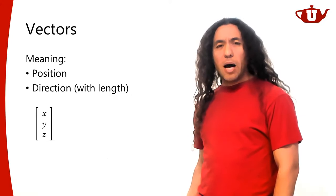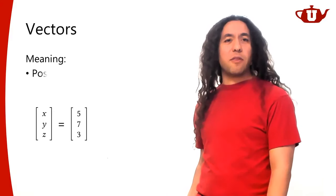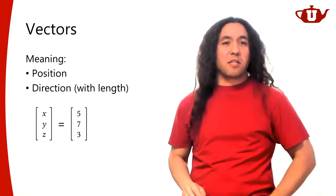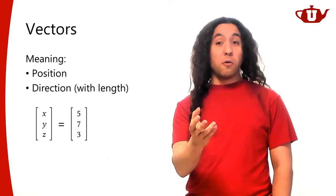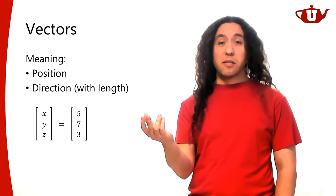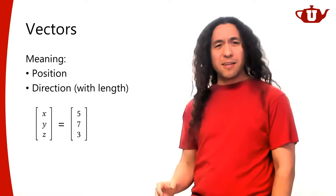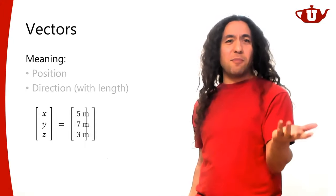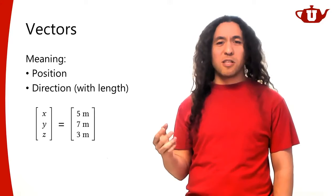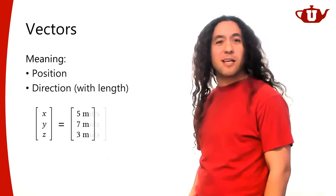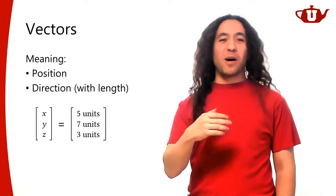If I give you a vector, say 5, 7, 3 — it could mean a position or a direction. To understand what this position means, I need to know the x, y, and z directions. Let's say x is this way, y is over here, and z is up there. But even knowing the directions, I also need to know the origin.